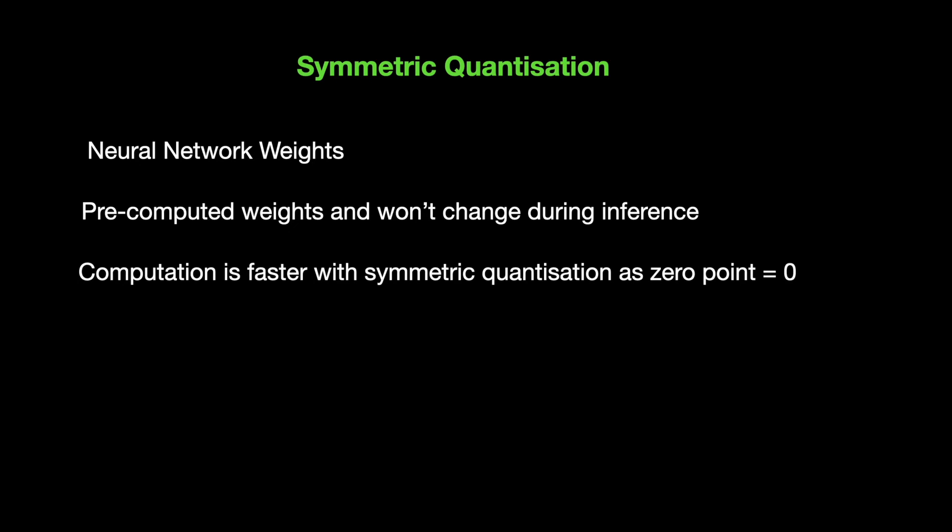Symmetric quantization is exactly what is used when quantizing neural network weights, as the trained weights are already pre-computed during inference and it won't change during inference. And computation is also simpler compared to asymmetric case as the zero point is equal to zero.